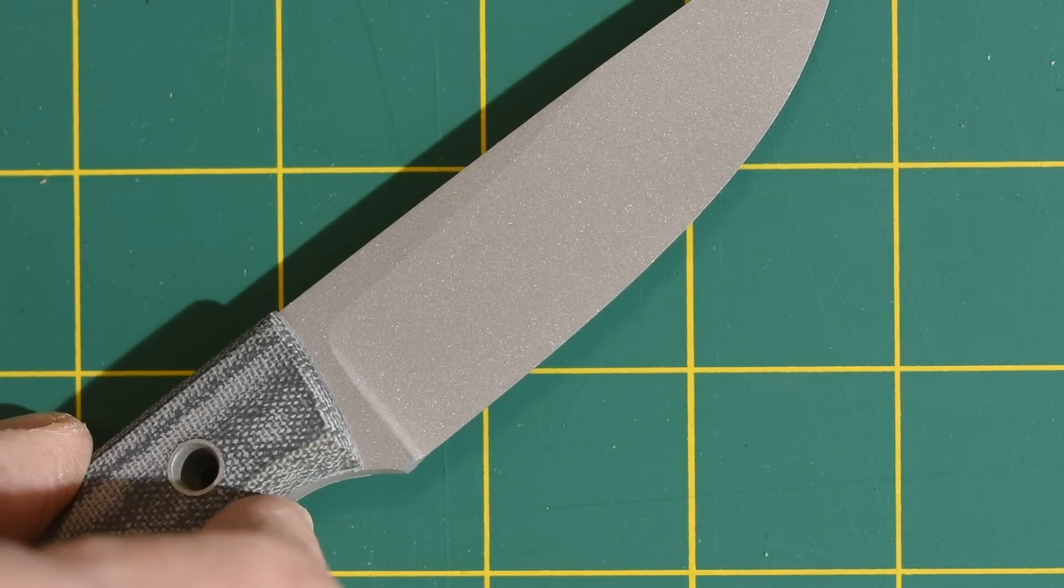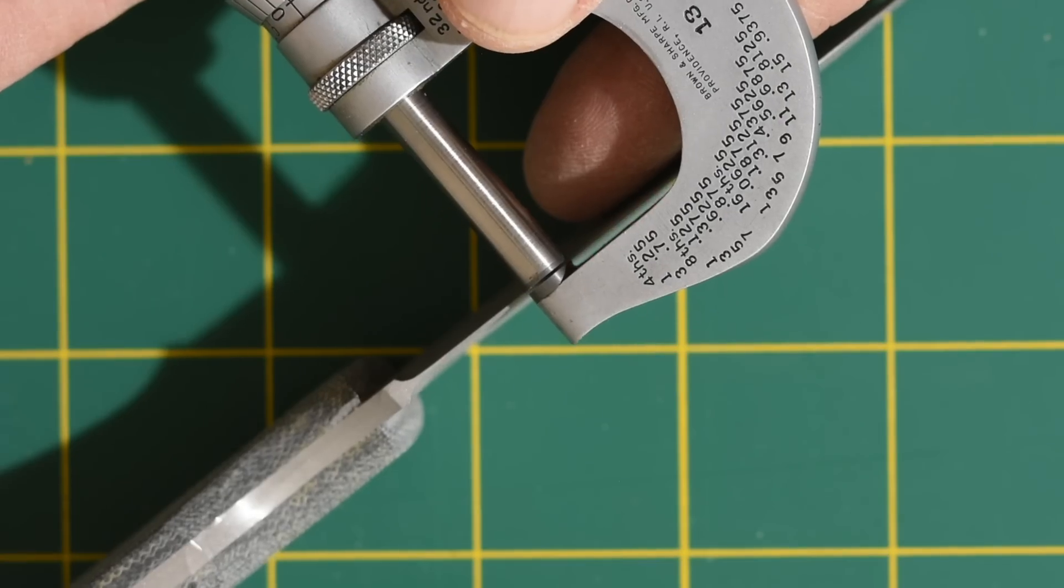But that's not all. Two more things come into play here. Thickness of the blade and thickness of the edge.